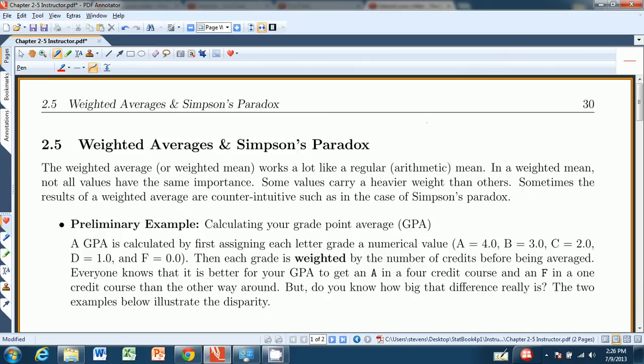Hi there. Welcome to section 2.5 from chapter 2 of the Think and Do book, Introduction to Statistics. So in this, our last section of chapter 2, we look at weighted averages and Simpson's paradox.